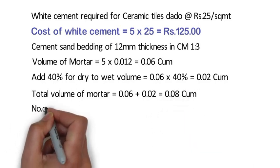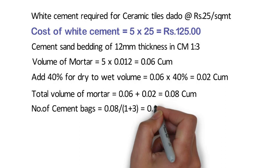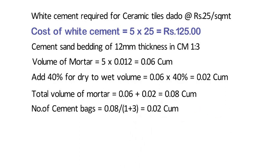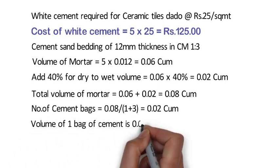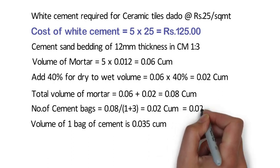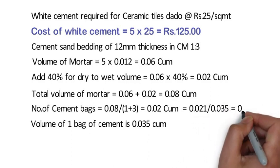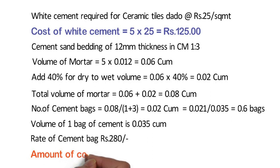Now we will calculate the number of cement bags. The formula is 0.08 divided by (1 + 3) = 0.02 cubic meters. The proportion of cement mortar is 1:3, so the cement part corresponds to 1 out of 4 total parts. The volume of 1 bag of cement is 0.035 cubic meters. Hence, 0.021 divided by 0.035 = 0.6 bags. Considering the rate of a cement bag at 280 rupees, the amount of cement required shall be 0.6 x 280 = 168 rupees.